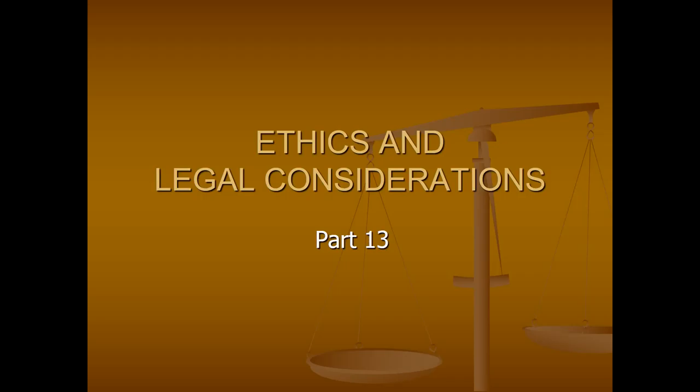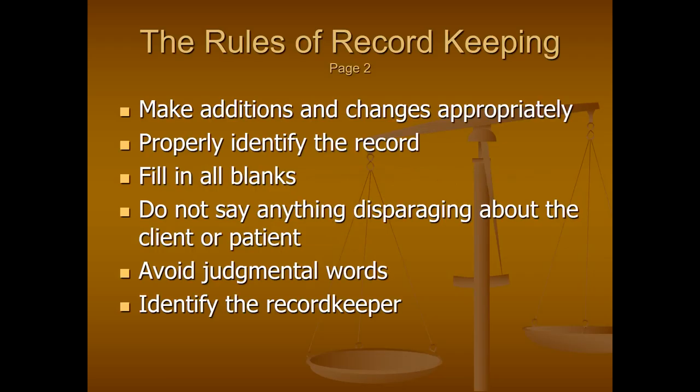This is the 13th lecture for the animal chiropractic class, covering ethics and legal considerations. We're continuing with record keeping — the common sense rules. Additions and changes should be made appropriately. If you make a mistake, use a pen to draw a single line through the mistaken information, then go to the next available entry, put down today's date, and write down what the correction is.